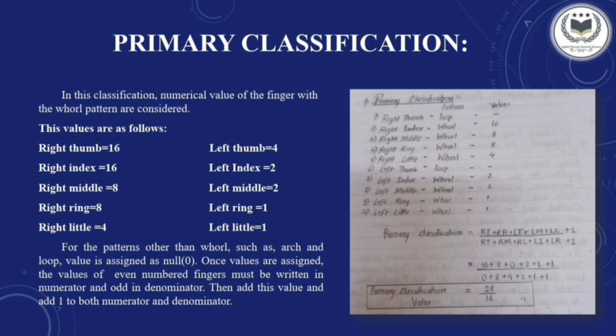When a whorl pattern is present in any finger — whether right thumb or left middle — the corresponding value is assigned. In the case where the pattern present is an arch or loop, we assign the null value, that is 0. For example, consider: right thumb as loop, right index as whorl, right middle as whorl, right ring as whorl, right little as whorl, left thumb as loop, left index as whorl, left middle as whorl, left ring as whorl, and left little as whorl. We assign the table values to whorl patterns and null values to arch or loop patterns. Even-numbered fingers are placed in the numerator and odd-numbered fingers in the denominator.